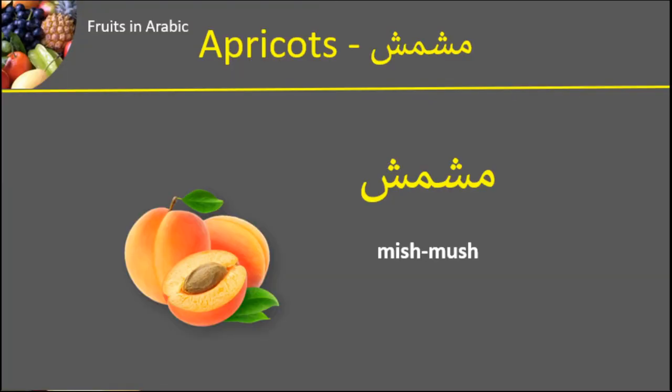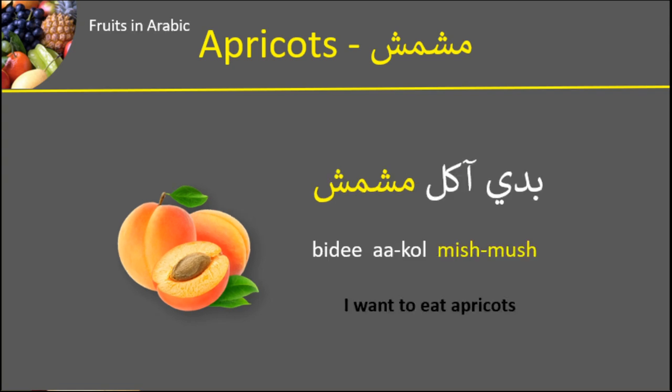The first one is مش-mush. Apricots. مش-mush. Here is an example of مش-mush used in a sentence: بدي آكل مش-mush — I want to eat apricots. بدي آكل مش-mush.